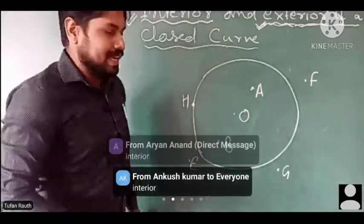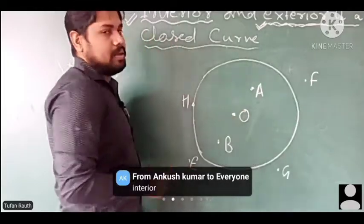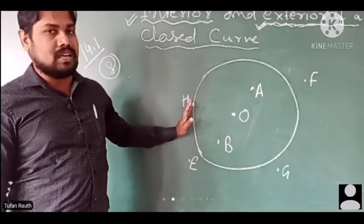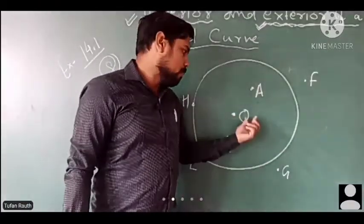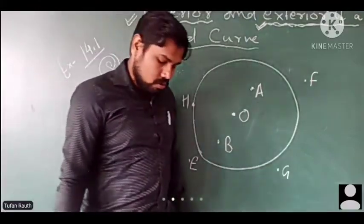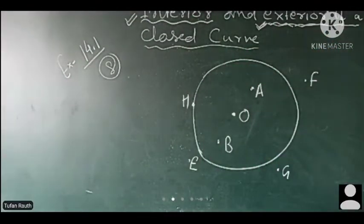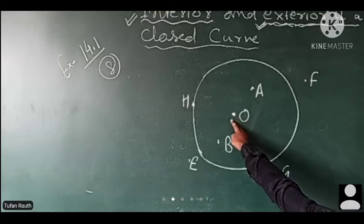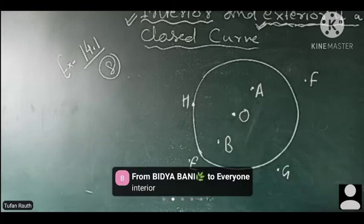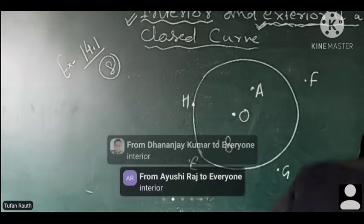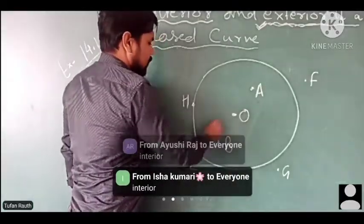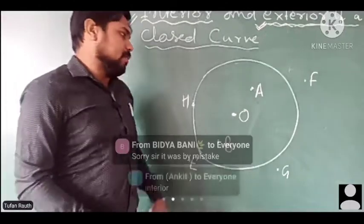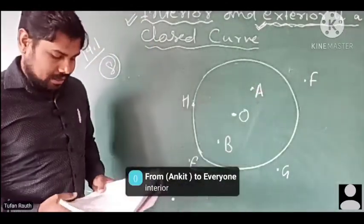So center O — where is it lying? Is it interior, exterior, or on the circle itself? Quickly tell me. Very nice — interior! O is also in the interior of the circle. If any point is inside the circle, it is interior. So A, O, and B — all three lie in the interior of the circle. Then where do points E, F, and G lie?